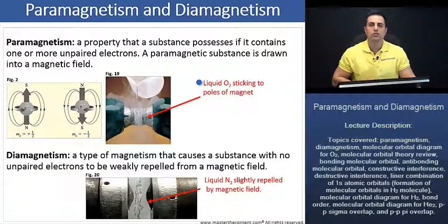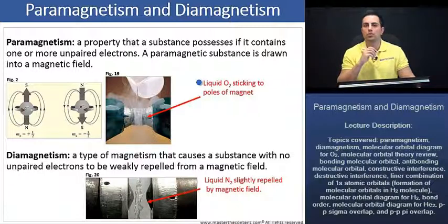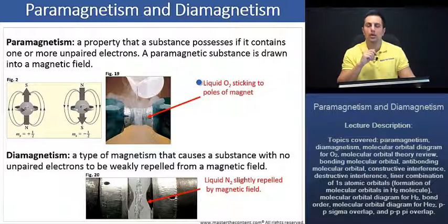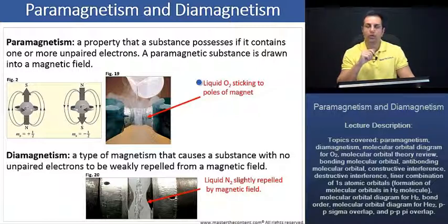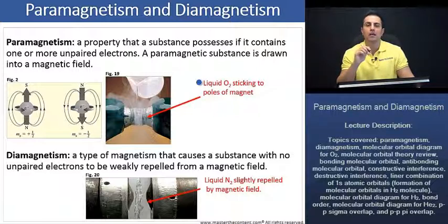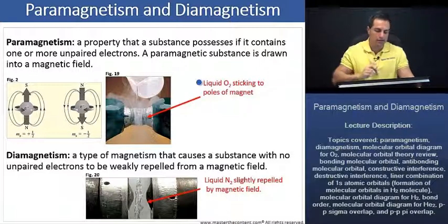The Lewis dot structure and the valence bond theory are not complex enough to really demonstrate the magnetic properties of both. For that, we're going to need to call upon the molecular orbital theory. But just before we do that, let's take a moment and examine paired and unpaired electrons in paramagnetic and diamagnetic atoms and ions.